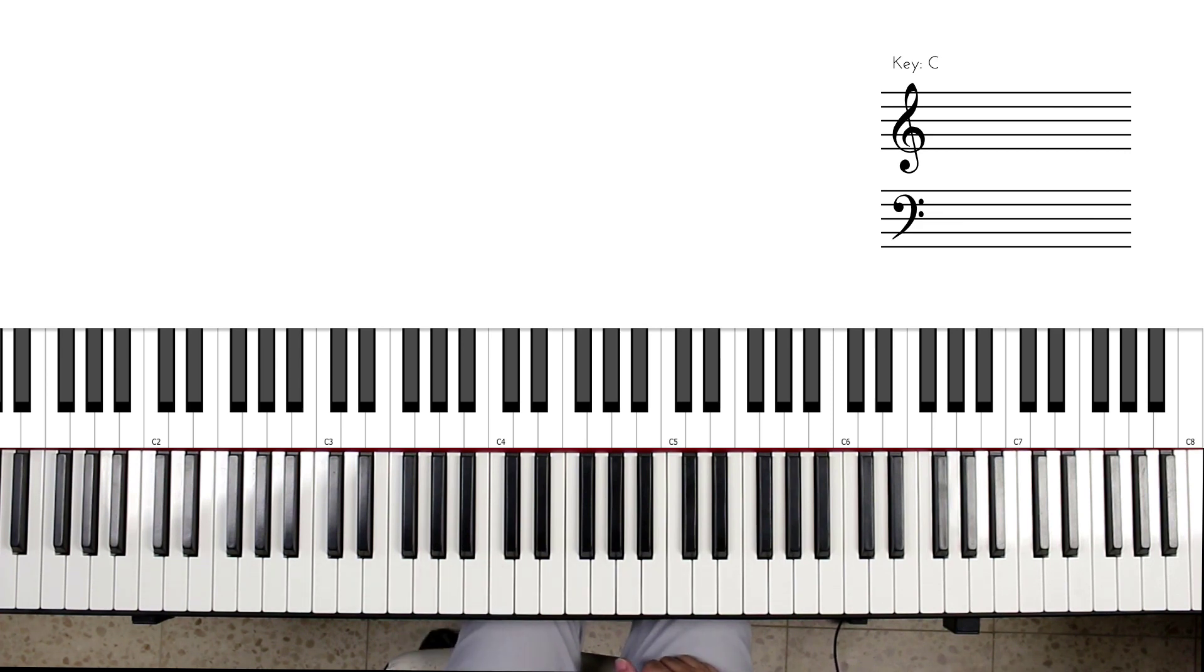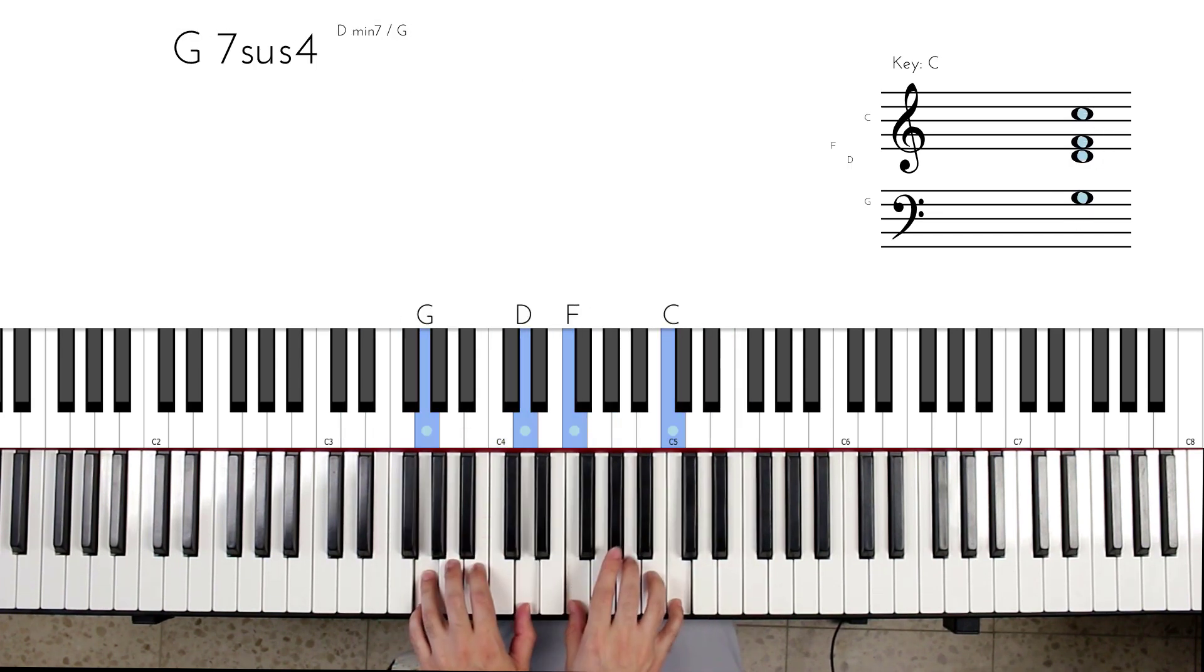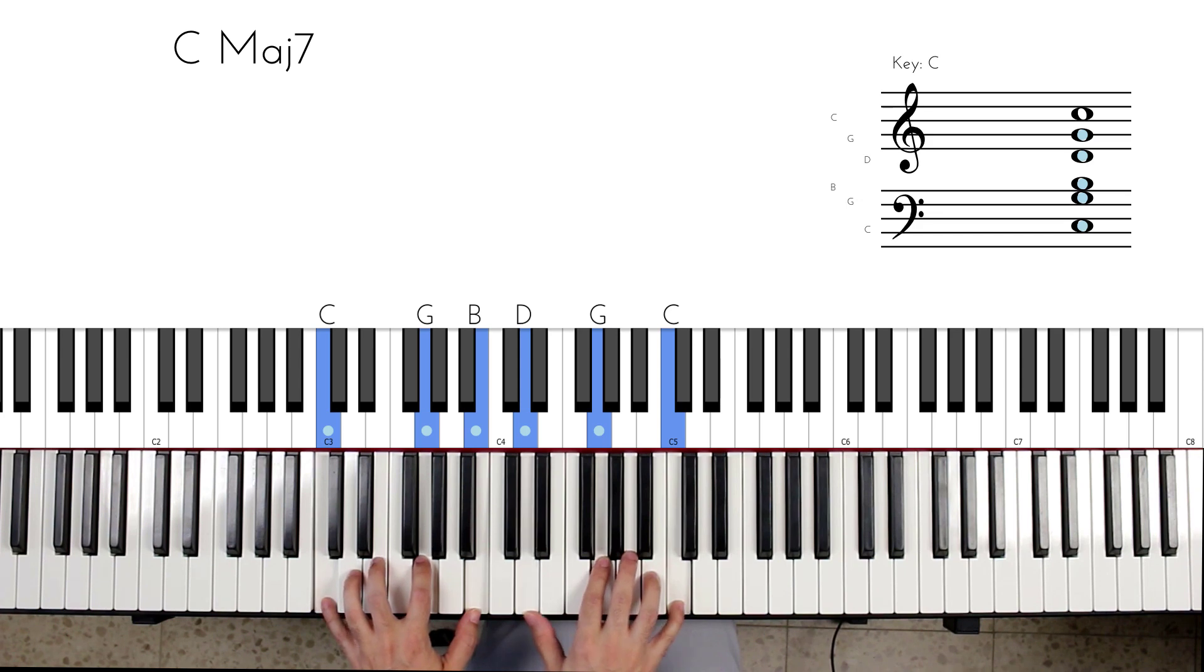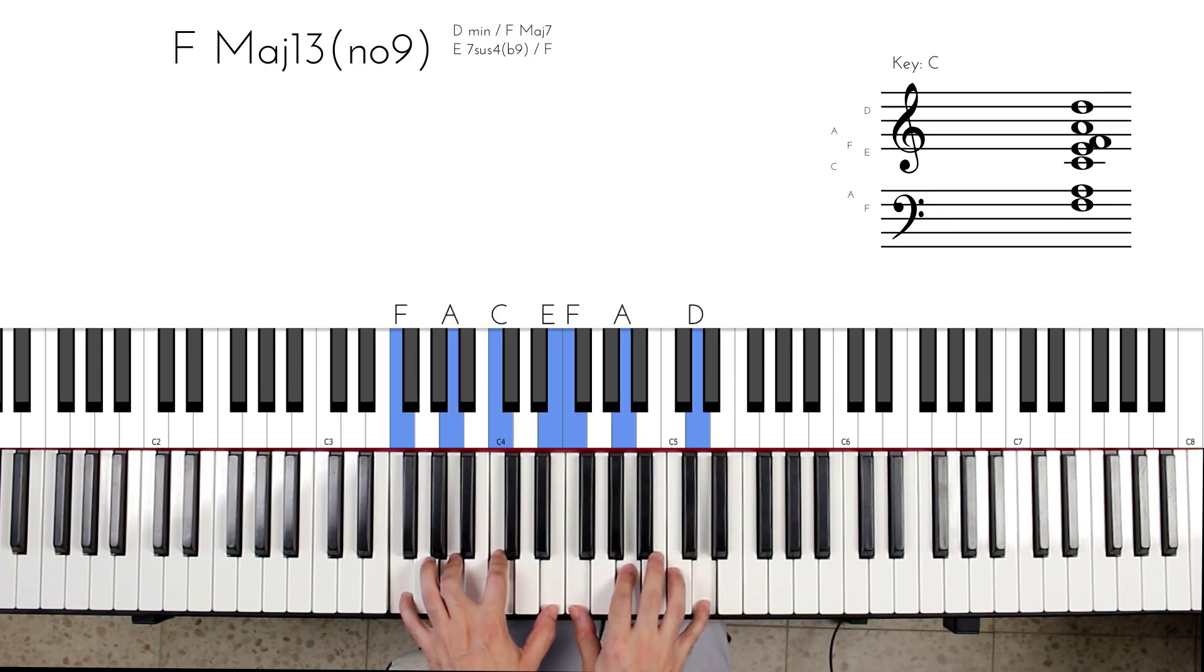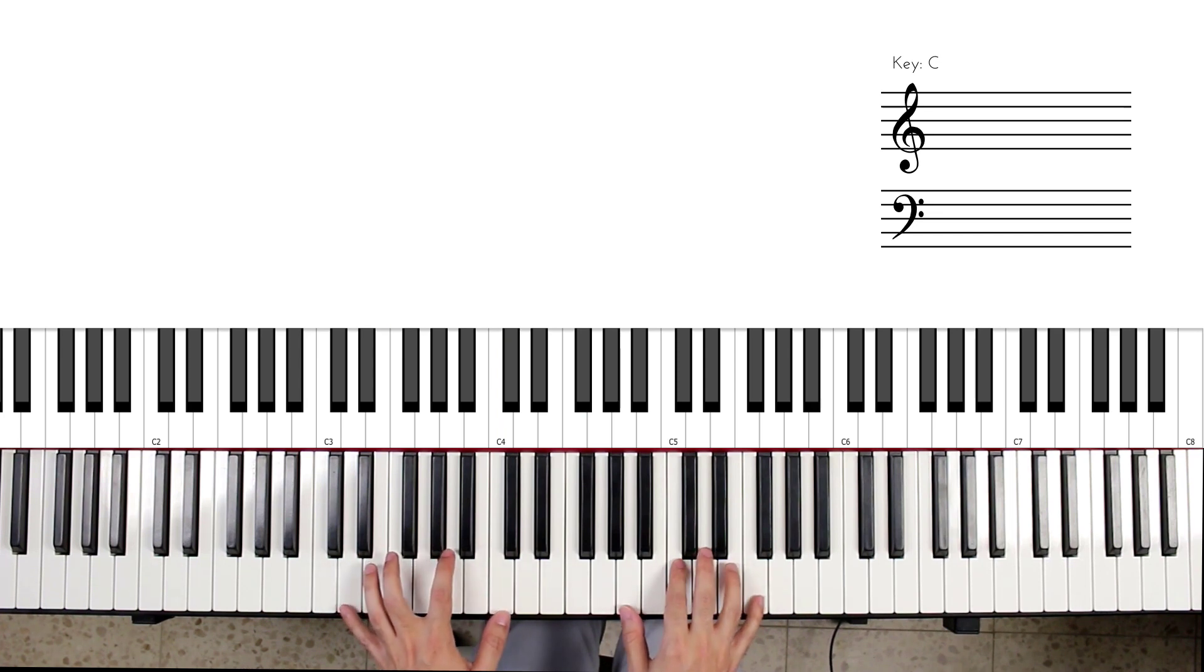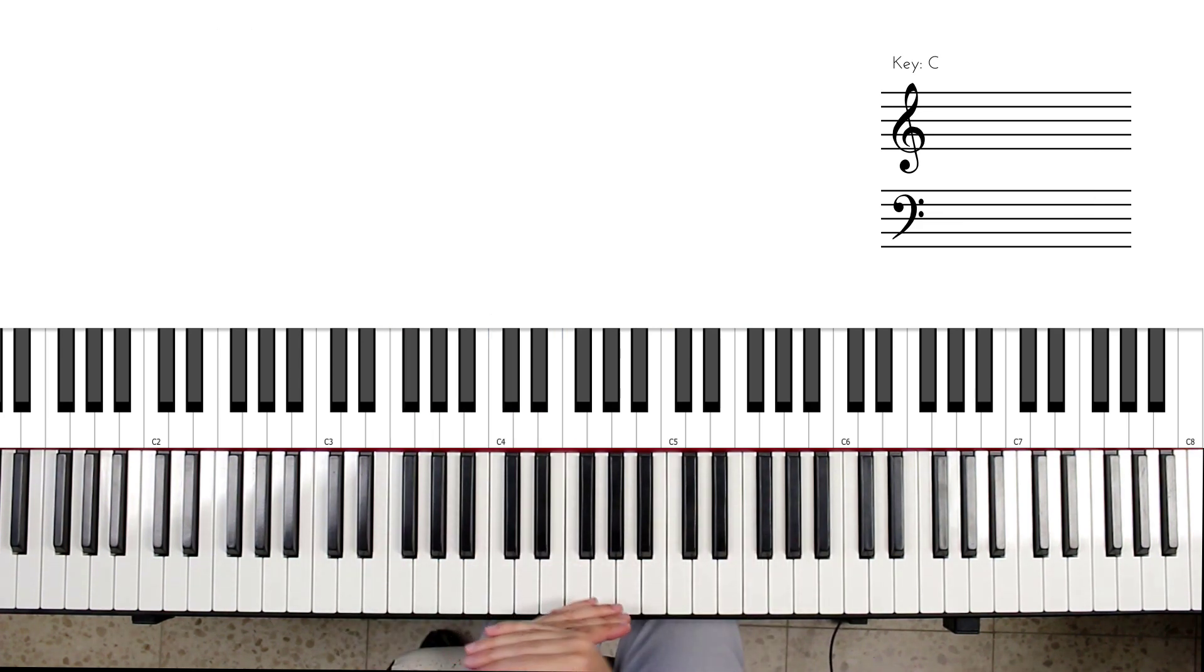The second place where planing occurs is this. So I'm referring specifically to this motion. Again, you can immediately see now that you've sort of seen the first planing example that I have a shape in one hand that's moving as a whole and a shape in the left hand as well that is moving as a whole. They're moving in opposite directions, which is also kind of a nice thing because it creates opposing motion.